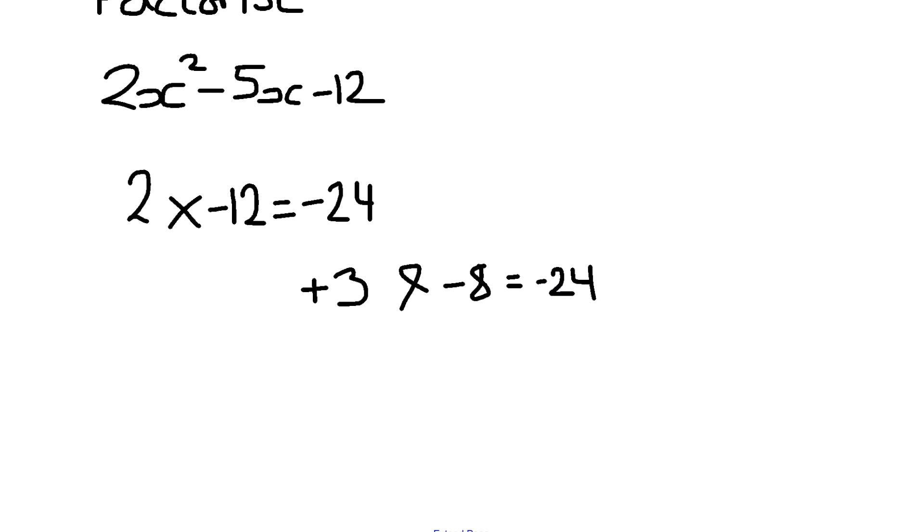The first thing I'm going to do is write the brackets. Open bracket, close bracket, open bracket, close bracket. I'm then going to put 2x in each of the brackets. So we have 2x, 2x, and then I'm going to put plus 3 in this bracket and minus 8 in this bracket.